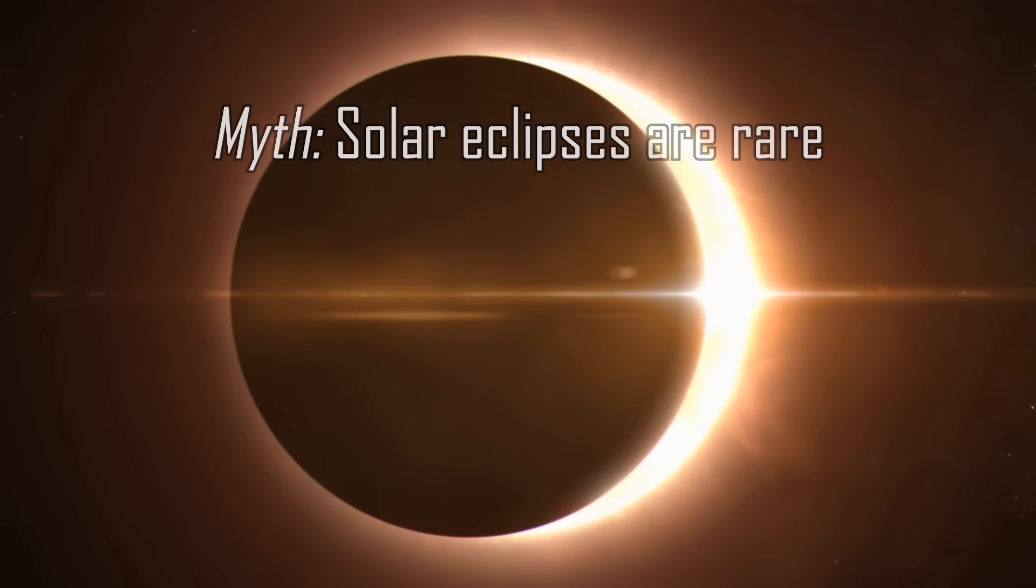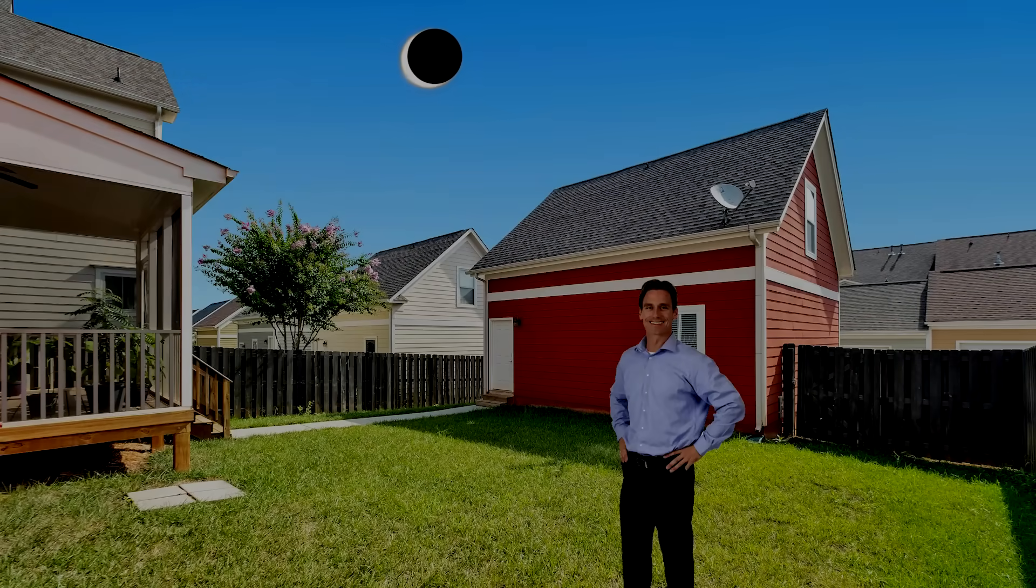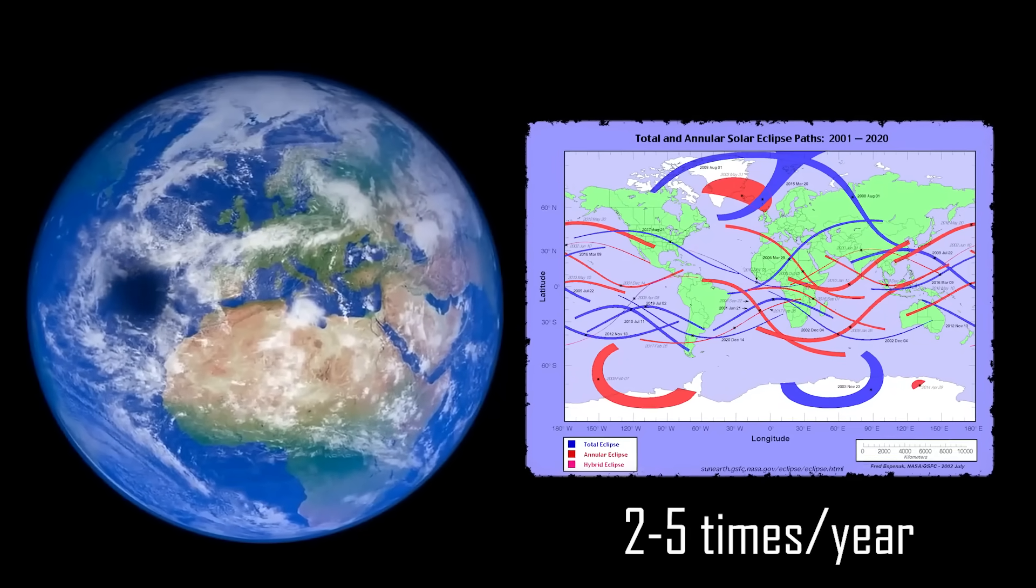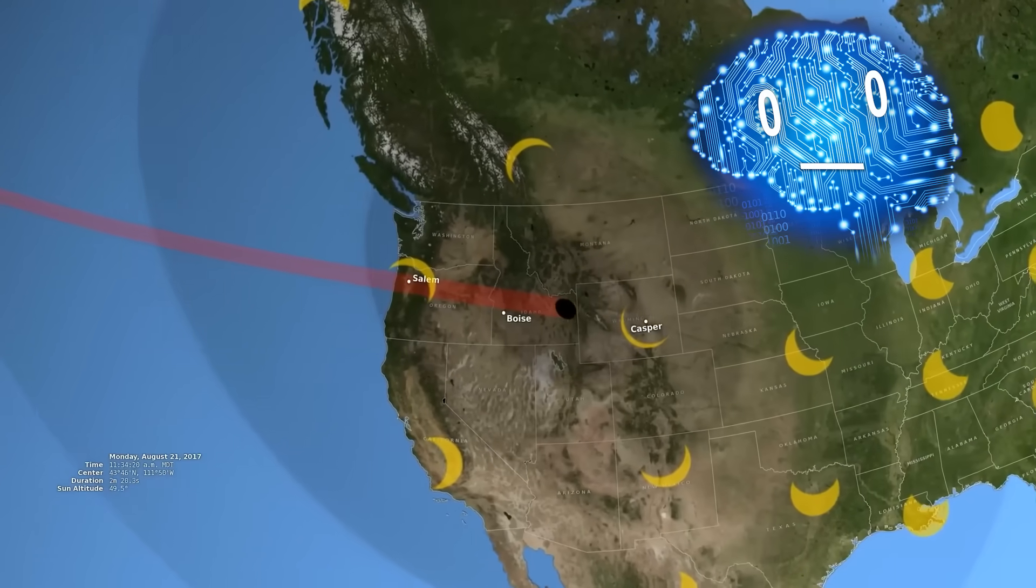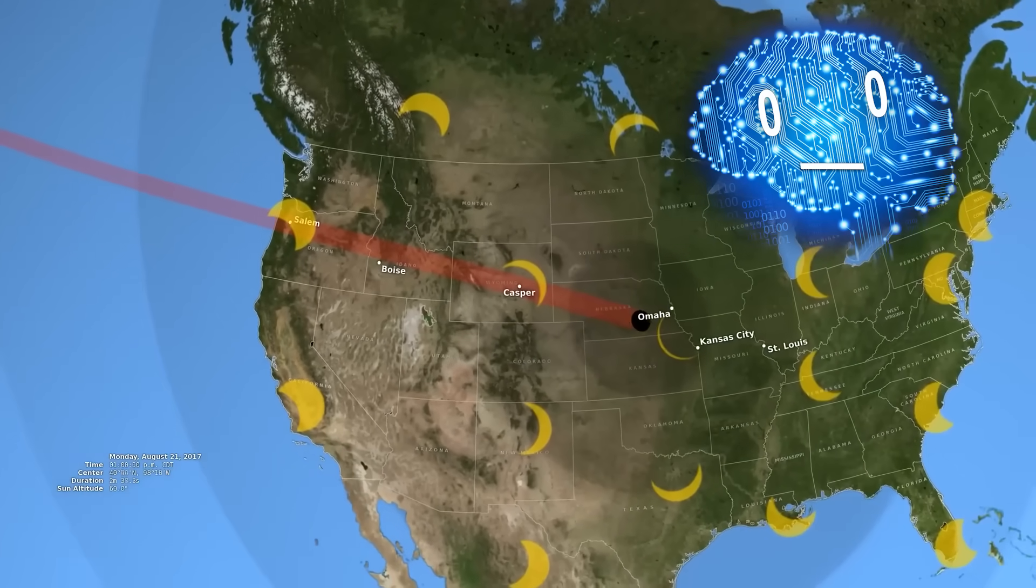Solar eclipses are rare. They might be rare in your backyard, but they happen on average two to five times every year around the Earth. The issue is that they're visible only along narrow paths, so they rarely happen above cities.